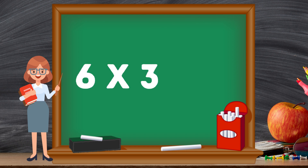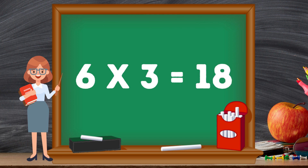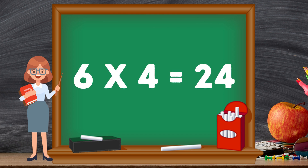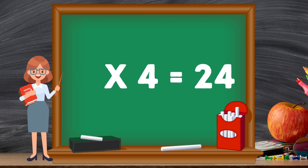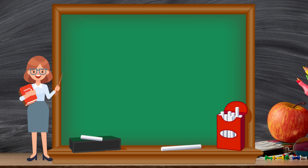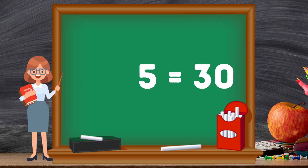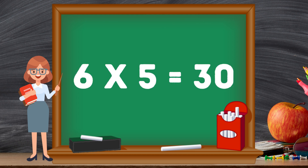Six threes are eighteen. Six fours are twenty-four. Six fives are thirty.